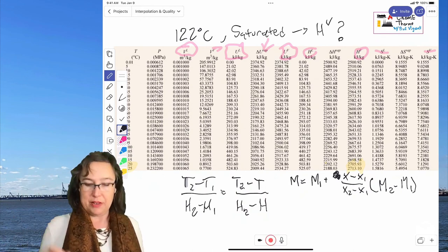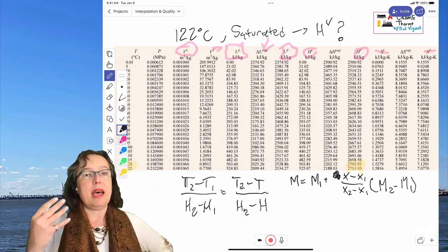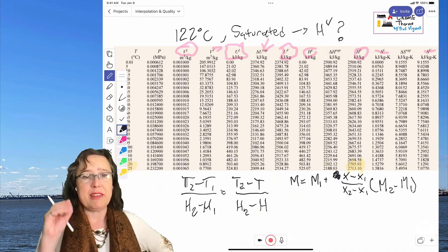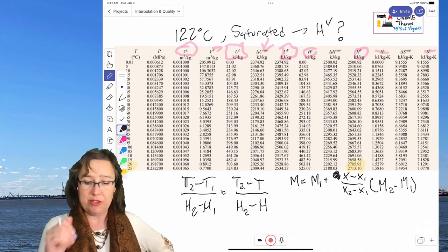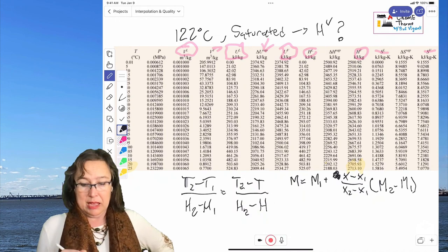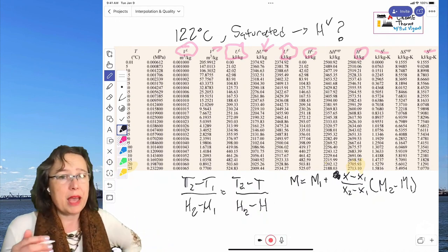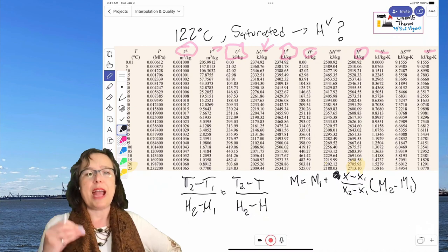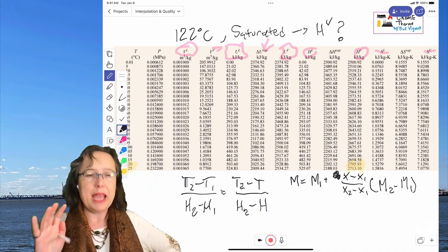and know that while this data here in the steam table is presented at a very high degree of precision, right? We've got six significant figures here. When you go and look at an online version, you're actually going to get a slightly different answer, and that's okay.